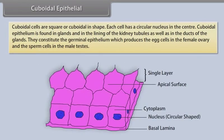Cuboidal epithelium. Cuboidal cells are square or cuboidal in shape. Each cell has a circular nucleus in the center. Cuboidal epithelium is found in glands and in the lining of the kidney tubules, as well as in the ducts of the glands. They constitute the germinal epithelium, which produces the egg cells in the female ovary and the sperm cells in the male testes.